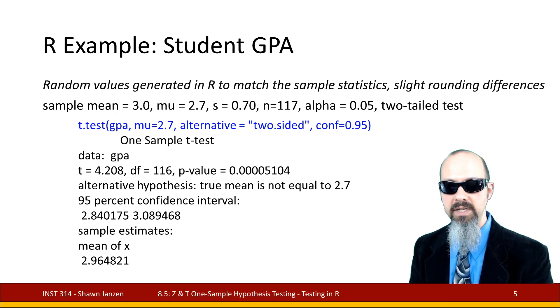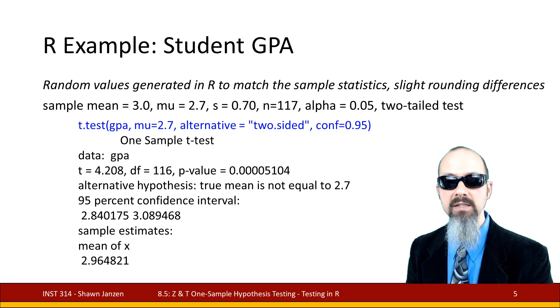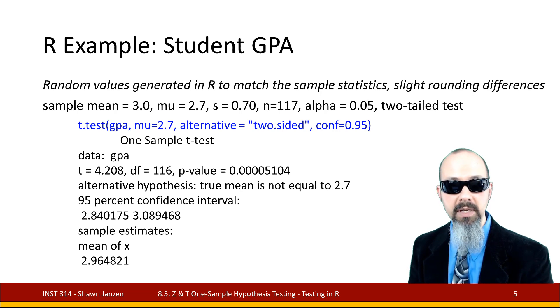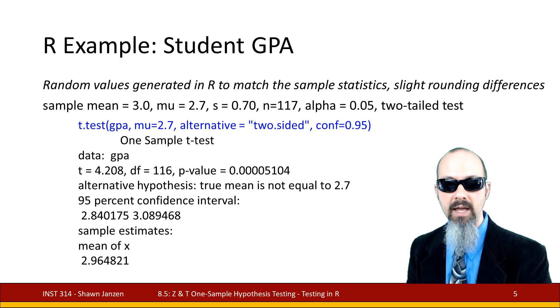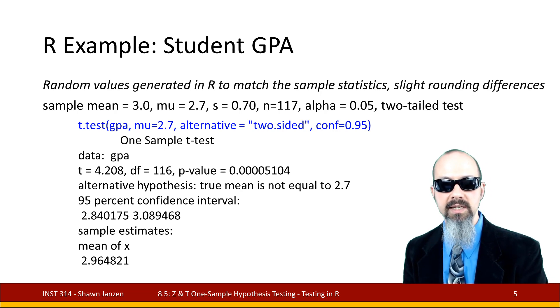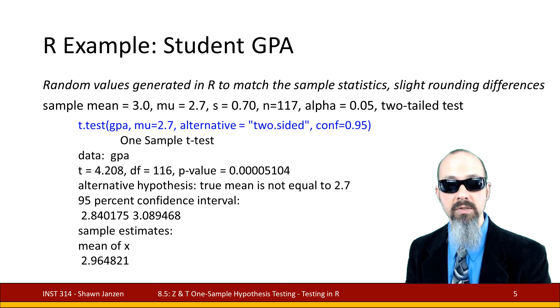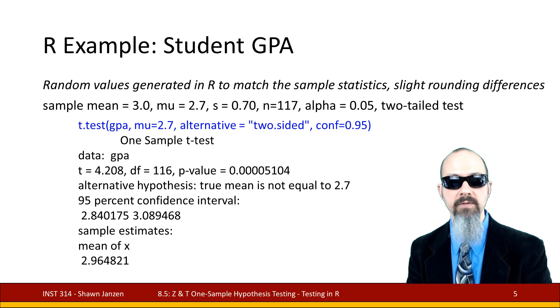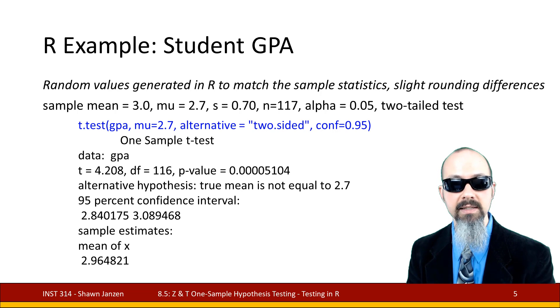If I had GPA, so this was a survey where we had a bunch of students and I had a vector of data, which I will provide you the script for if you want to run this yourself, it's going to generate random values that match the sample statistics with a sample mean of 3.0, a standard deviation of 0.7, and n of 117. We've saved the sample GPA as an object called GPA, then I specify mu equals 2.7 to say that this is the population average. And then I'm including here alternative equals two-sided in quotes and conf equals 0.95. These are the default values, but I'm putting this here so you can see it.